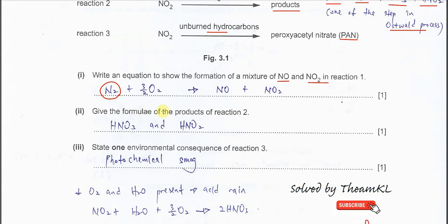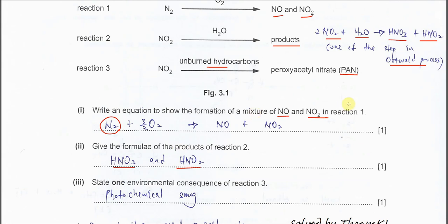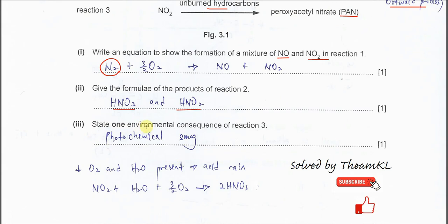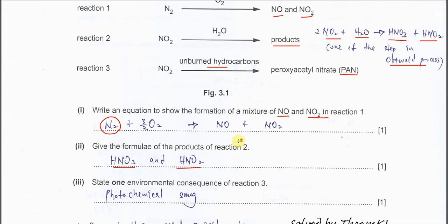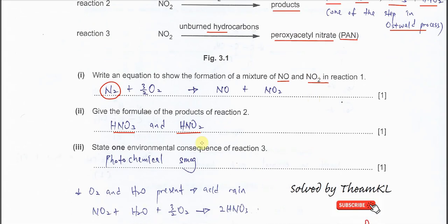Part B2 is quite difficult for some candidates, but you should know it. The two products formed are HNO₃ and HNO₂ — for those who know the Ostwald process. Part B3: State one environmental consequence of reaction 3. The process forms peroxyacetyl nitrate (PAN), and once this compound forms, it leads to the environmental consequence known as photochemical smog.